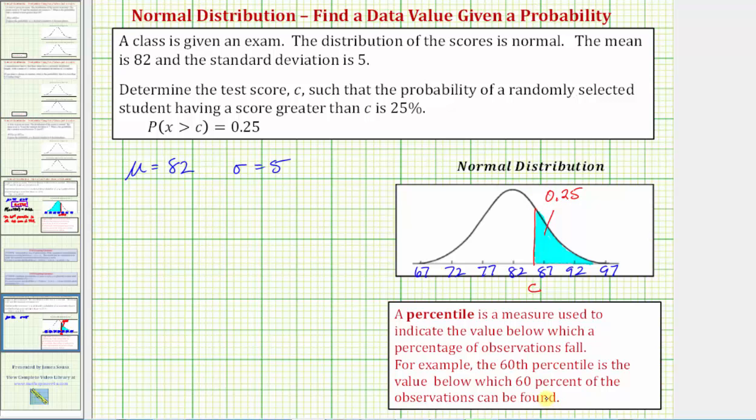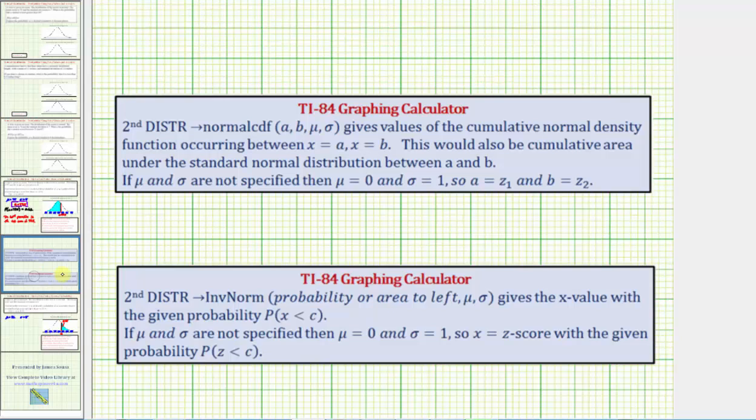To find this value of c on the TI-84, we'll be using the inverse norm feature, where once we access inverse norm, we enter the probability or area to the left, comma the mean, comma the standard deviation.